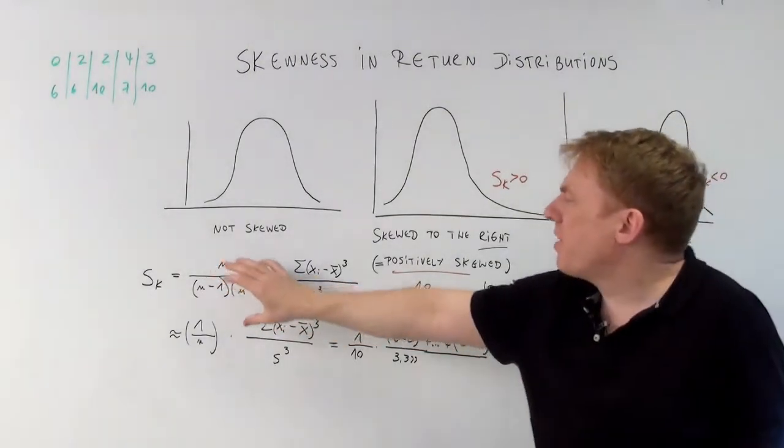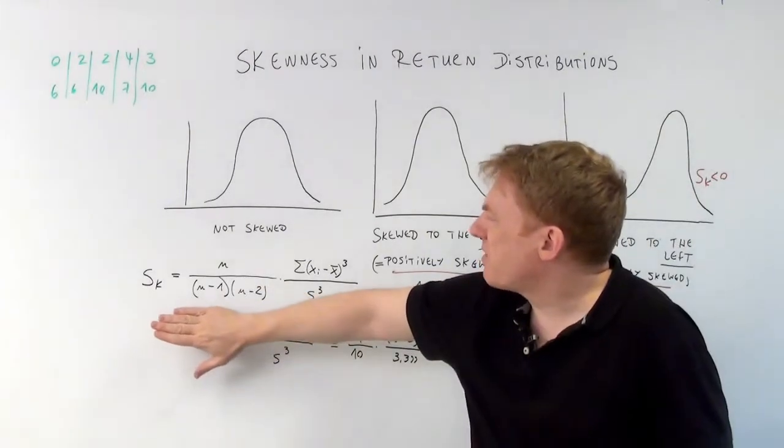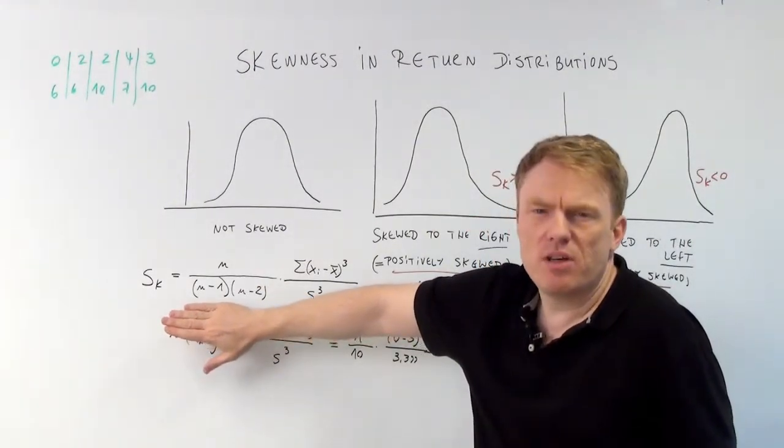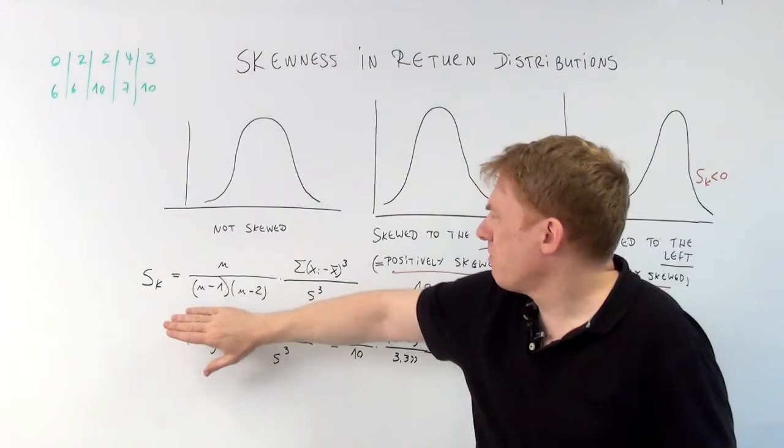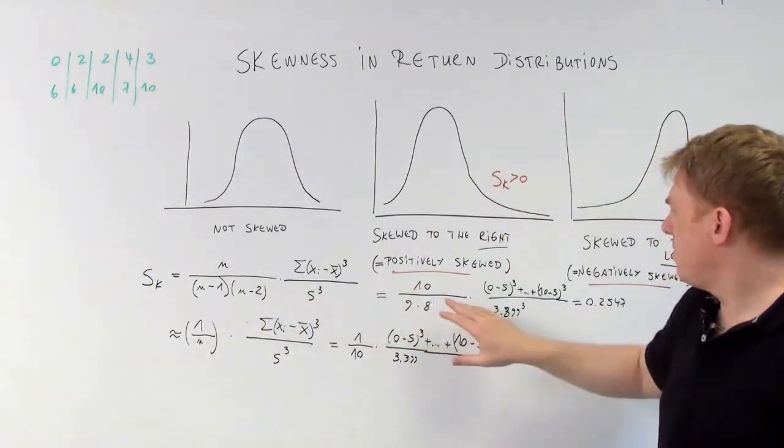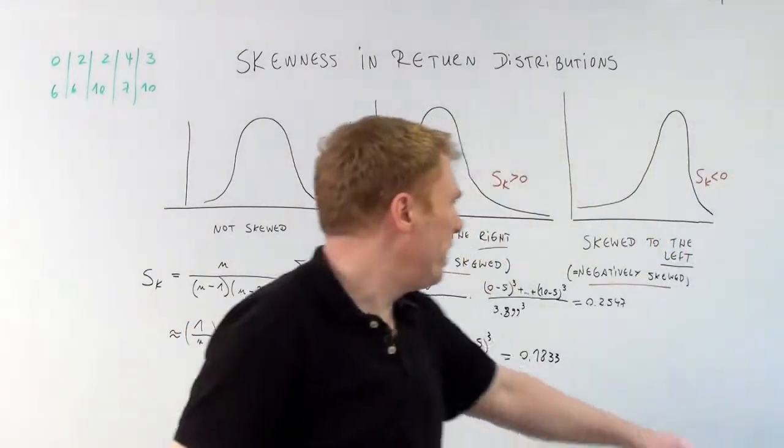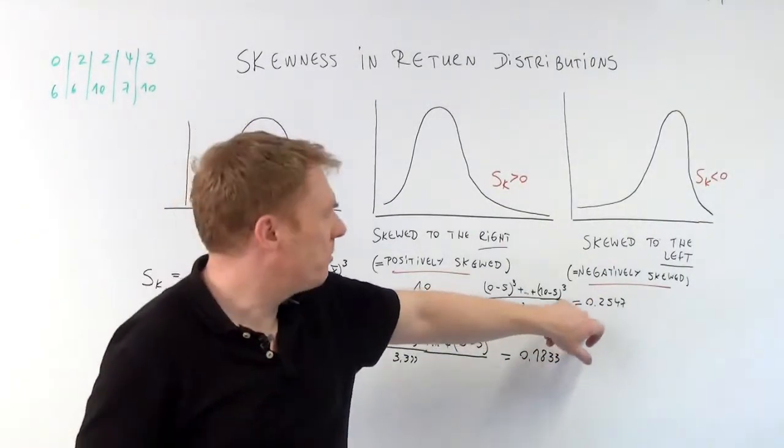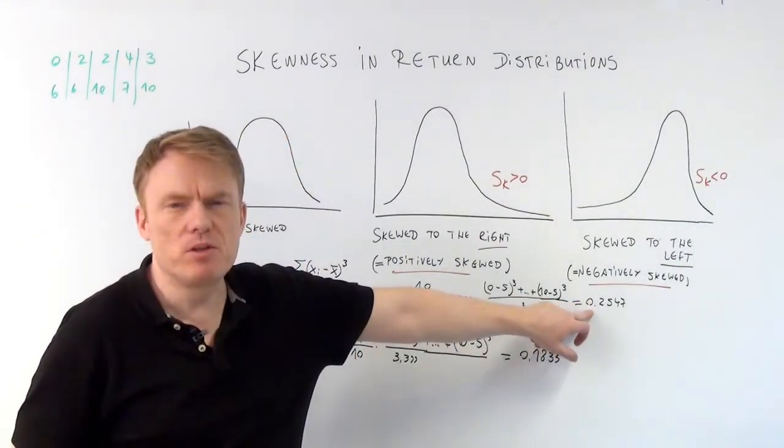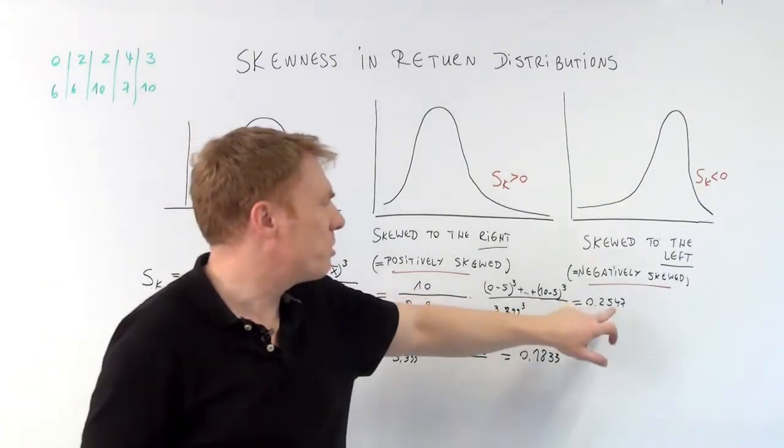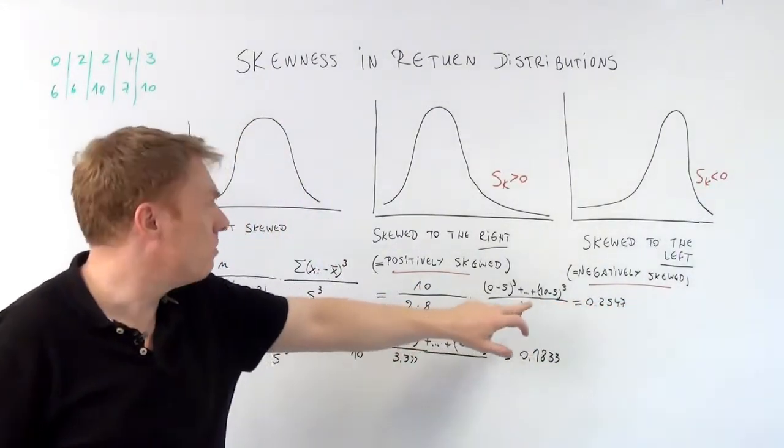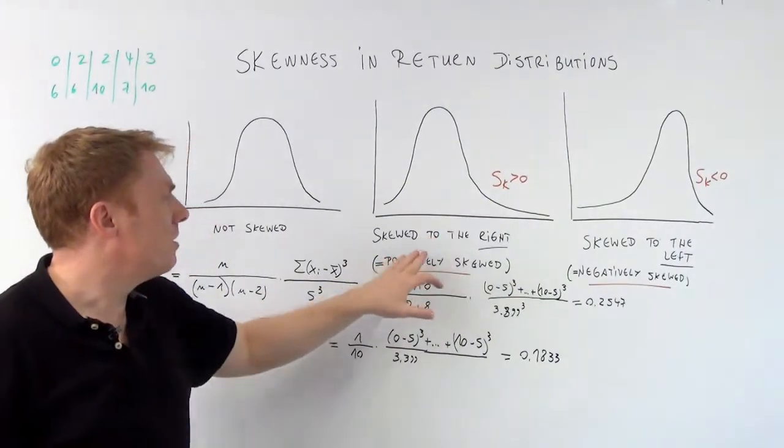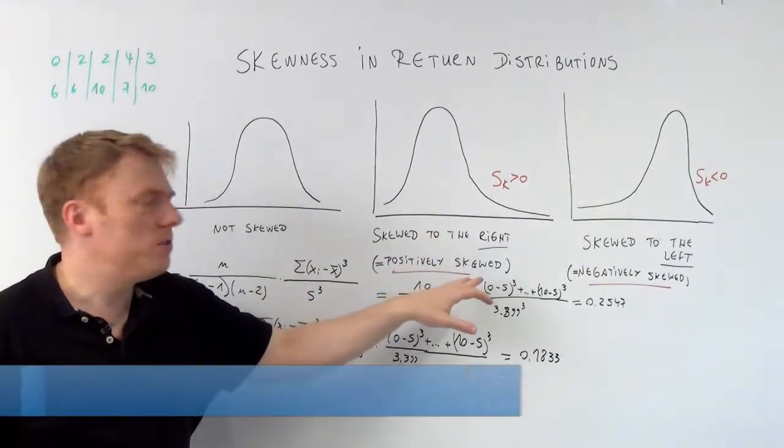This number s sub k indicates the measure of skewness. As we compute it, the result is 0.2547, which is strictly superior to 0, meaning we have a positively skewed distribution.